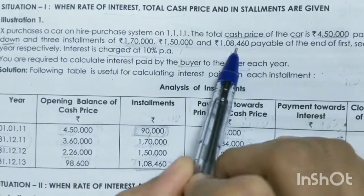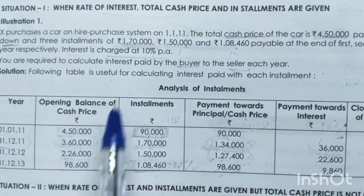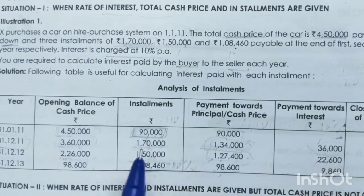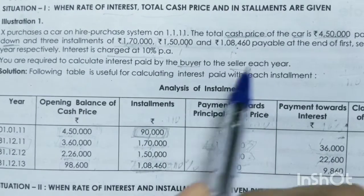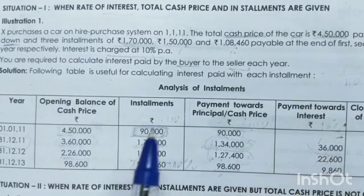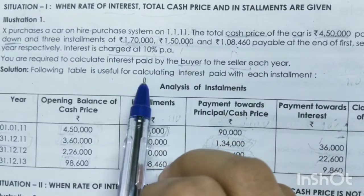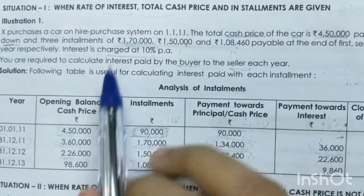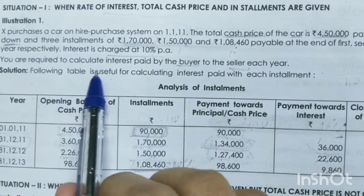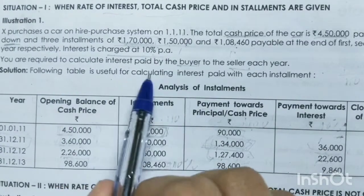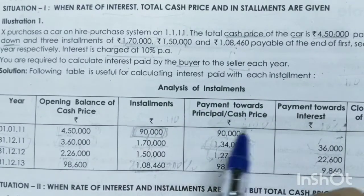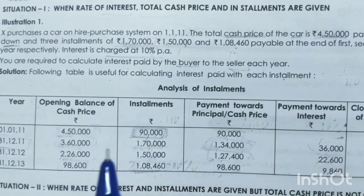The installments are payable at the end of the first, second and third year respectively. Interest is charged at 10% per annum. You are required to calculate the interest paid by the buyer to the seller each year.